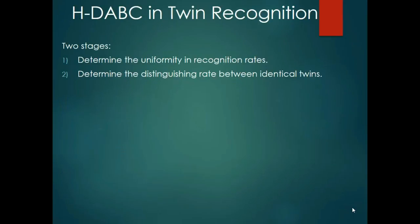The two stages employed in the HDABC algorithm for twin recognition are as follows. Initially, for both the training phase and the testing phase, the same images are provided as input in order to determine the uniformity in the recognition rates.